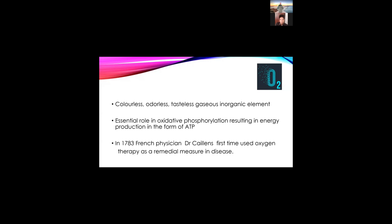Oxygen — as you all know, it is a colorless, odorless, tasteless, gaseous inorganic element. It plays an important role in oxidative phosphorylation where you produce ATPs. Aerobic production is about 38 ATPs and anaerobic production is two, so there is a significant difference. It is a very important essential element in energy production. In 1783, a French physician called Carlinen used oxygen as a therapy, and since then medical people have been using oxygen.